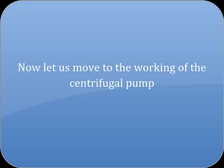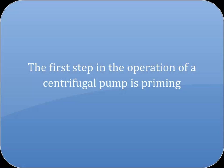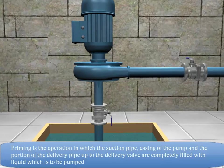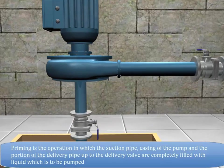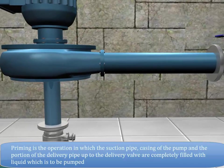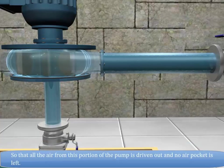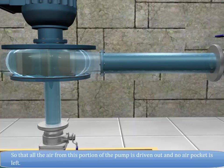Now let us move to the working of the centrifugal pump. The first step in the operation of a centrifugal pump is priming. Priming is the operation in which the suction pipe, casing of the pump, and the portion of the delivery pipe up to the delivery valve are completely filled with the liquid which is to be pumped, so that all the air from this portion of the pump is driven out and no air pocket is left.